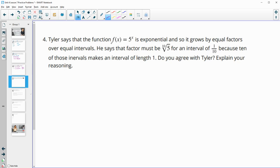Number four: Tyler says the function f(x) equals 5 to the x is exponential, and so it grows by equal factors over equal intervals. He says that the factor must be the 10th root of 5 for an interval of 1/10 because 10 of those intervals makes an equal interval of 1. Do we agree with Tyler? If we think about an interval and split it into 10 equal factors, we're going to split this into 10 equal factors: 1, 2, 3, 4, 5, 6, 7, 8, 9, 10.